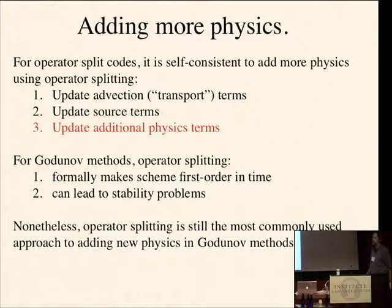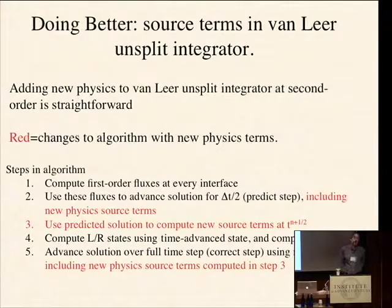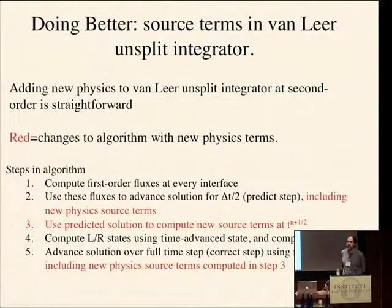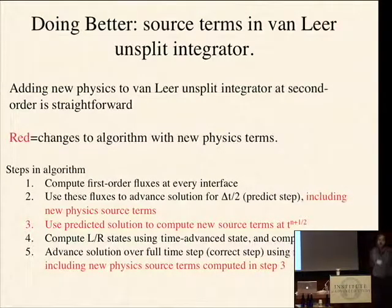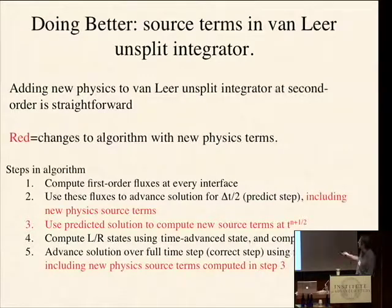Nonetheless, most people don't worry about it and still use operator splitting, and it works for many problems. It is possible to do better, however. I've described two unsplit integrators: the Van Leer integrator — an extension of the Hancock MUSCL integrator — and the Corner Transport Upwind (CTU) integrator. I'll describe how to embed source terms in both. One advantage of the Van Leer integrator is that it's quite simple to extend consistently with more physics at second order.